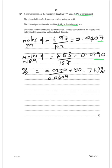Now, we also need to describe a method to obtain a pure sample of 3-nitrobenzoic acid from the impure solid. So, because they're solids, we're looking at recrystallisation. So the first point you need to make, you're going to recrystallise. The way you do that is you dissolve the impure product in a minimum volume of hot solvent.